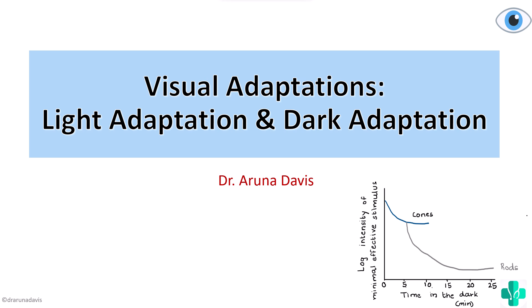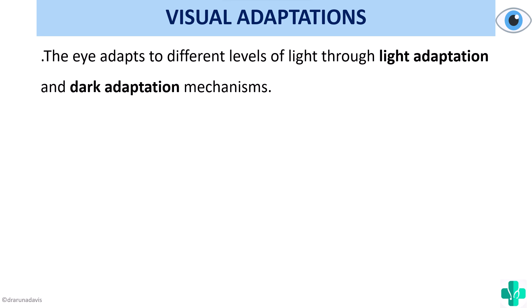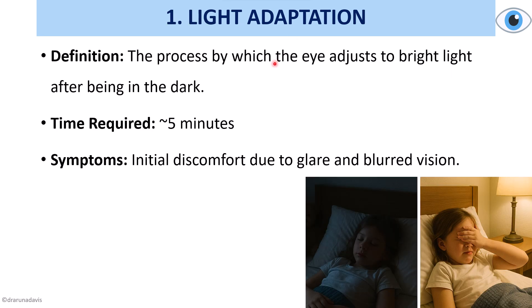In this video we're going to see about visual adaptations — light adaptation and dark adaptation. Dark adaptation has been asked multiple times in various university exams, so we'll concentrate more on that. The definition of visual adaptations is that the eye adapts to different levels of light through light adaptation and dark adaptation mechanisms.